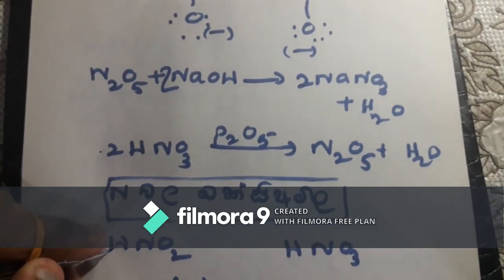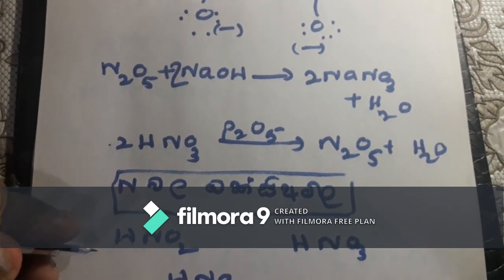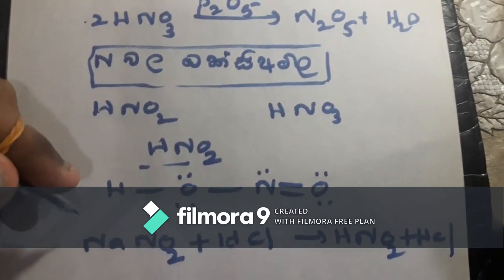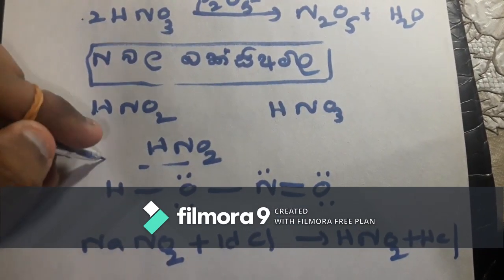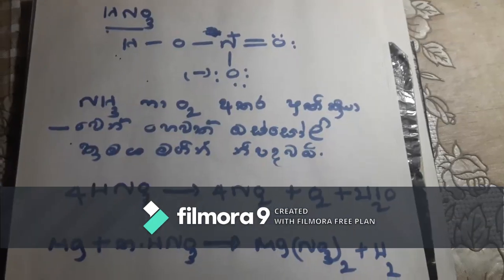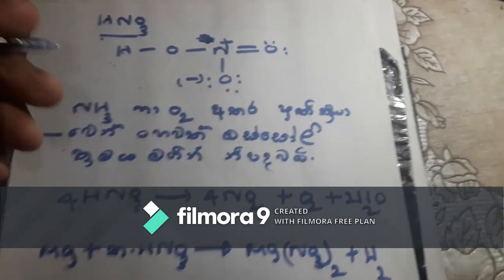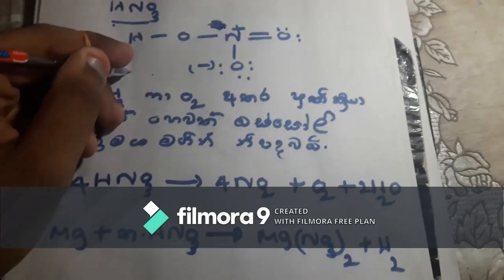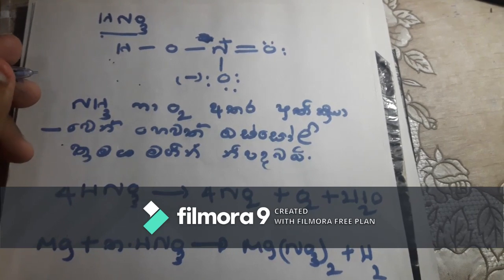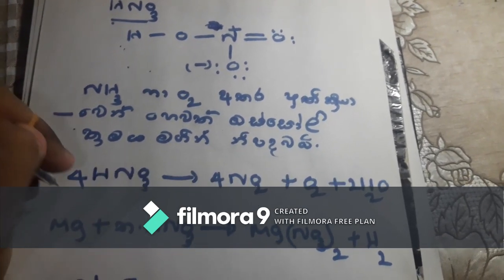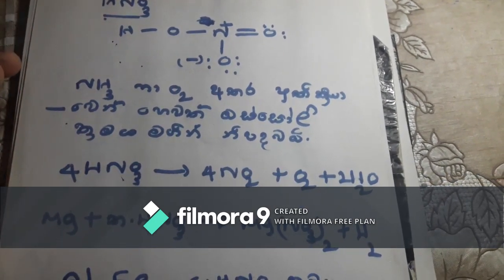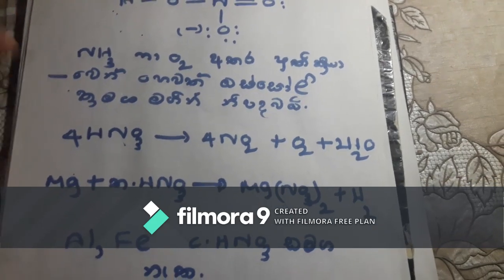HNO2 and HNO3. HNO2 is a good thing to use. We can use HNO3 to help the nitrogen. You can use HNO3. We can use HNO2 to help the nitrogen and cells. We can use HNO3 hydrogens.